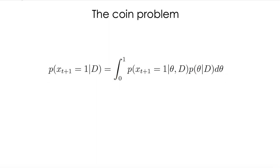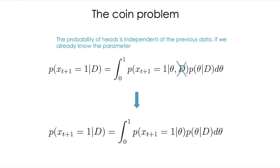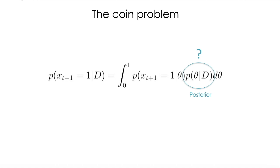This is exactly what we do whenever we add a parameter we don't know: we integrate or sum over all possible values and multiply by its probability. In the first factor, since we know theta because we are conditioning on theta, we don't need the data anymore. In other words, if we flip a coin and we know the probability of heads, we don't need to know what happened in the past because every single flip is independent. So we can reduce our equation, and the second factor is going to be the posterior.